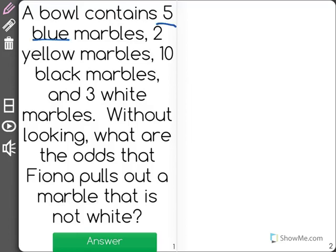A bowl contains five blue marbles, two yellow marbles, ten black marbles, and three white marbles. Without looking, what are the odds that Fiona pulls out a marble that is not white?